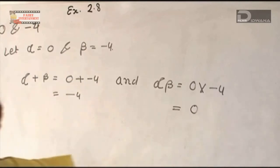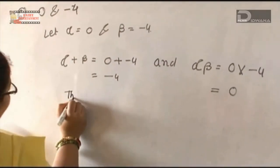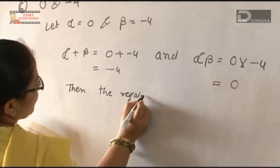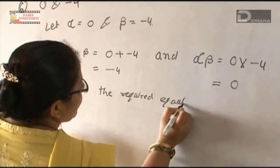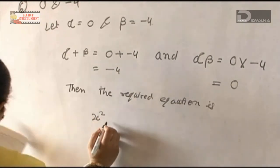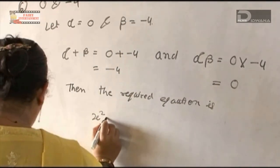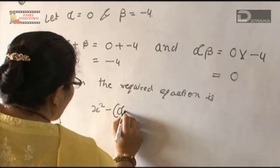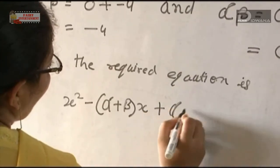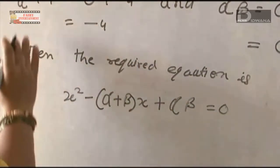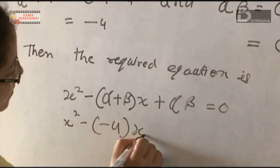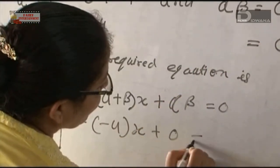The required equation is x squared minus (alpha plus beta)x plus alpha beta equals 0. The value of alpha plus beta equals minus 4 and alpha beta equals 0.